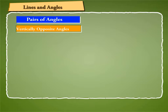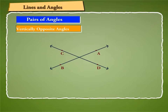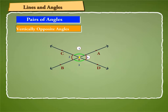Vertically opposite angles: in the given on-screen figure, two lines AB and CD intersect each other at O, forming angle 1, angle 2, angle 3, and angle 4. Angle 1 and angle 2 form a linear pair. Similarly, angle 2 and angle 3, angle 3 and angle 4, and angle 4 and angle 1 form linear pairs. But angle 1 and angle 3 do not have a common arm and so do not form a linear pair.